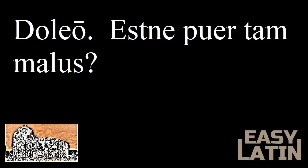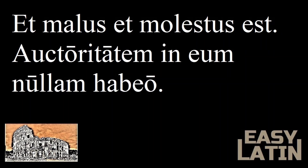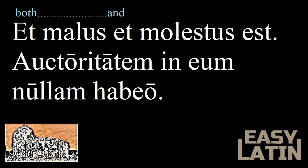Doleo, est ne puer tam malus? The root word dol means pain and is in many English words like condolence, dolorous, and doleful. So doleo can mean 'I hurt,' but it is also an idiomatic way to say 'I'm sorry.' And then he continues: Is the boy so bad? To which the response is: Et malus et molestus est. Auctoritatem in eum nullam habeo. It functions like 'both...and' in English — so he is both bad and annoying. The second sentence is almost English: Authority in him null I have, or in smoother English, I have no authority over him.